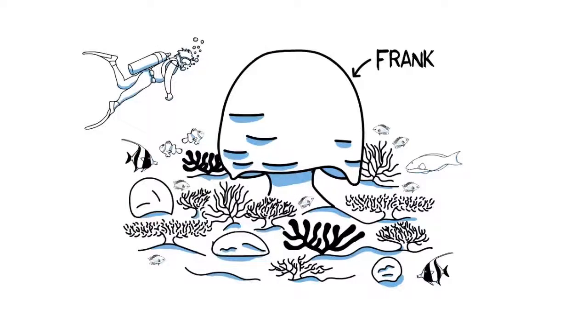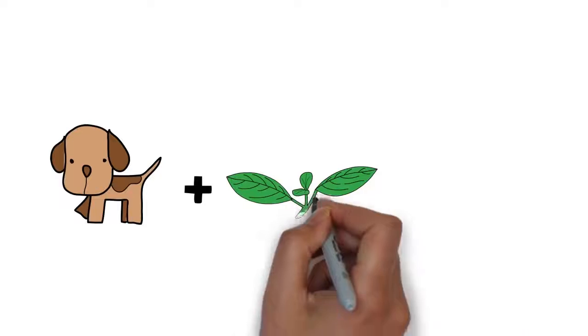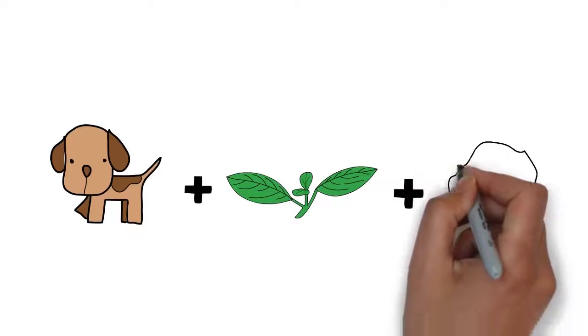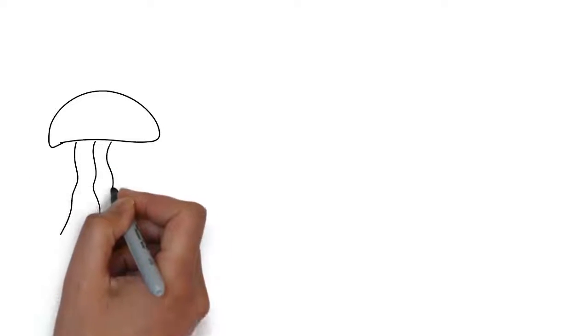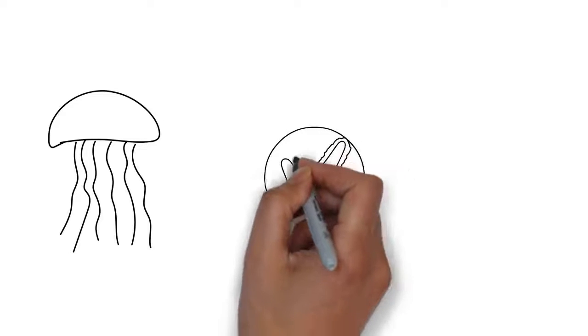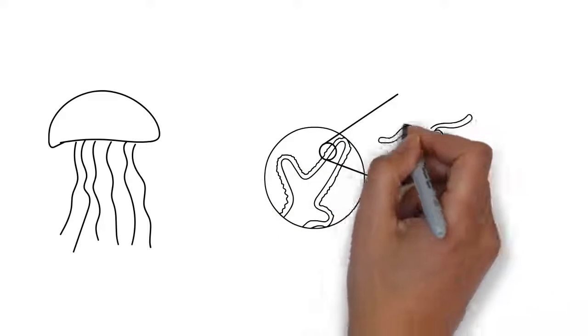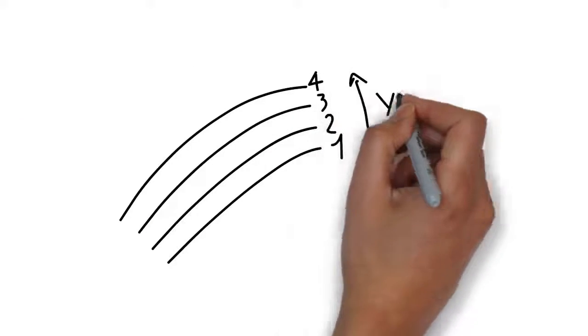But what is a coral exactly? Corals like Frank are in a way an animal, a plant and also a rock. The individual animals who form a coral are very similar to jellyfish. The main difference between a jellyfish and a coral is that a coral can produce a skeleton made of limestone, which is slowly laid layer upon layer over many many years.